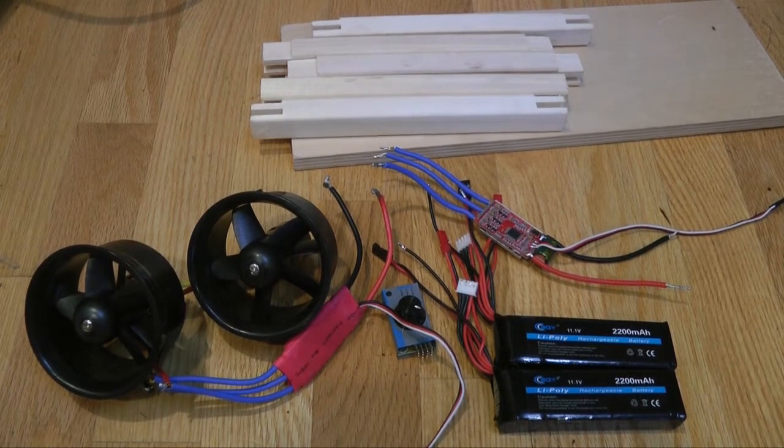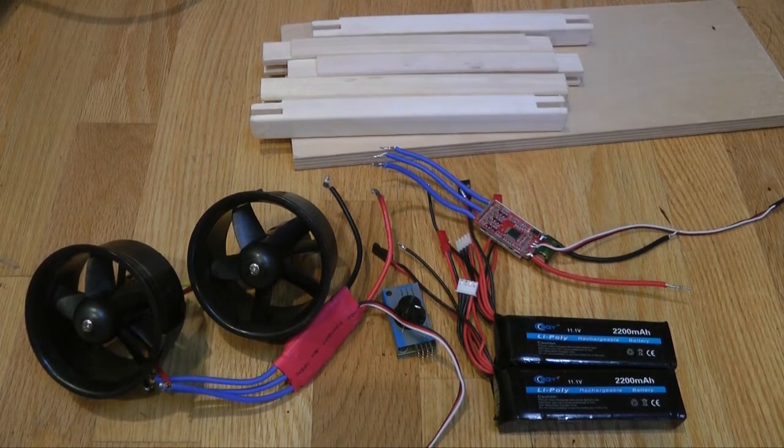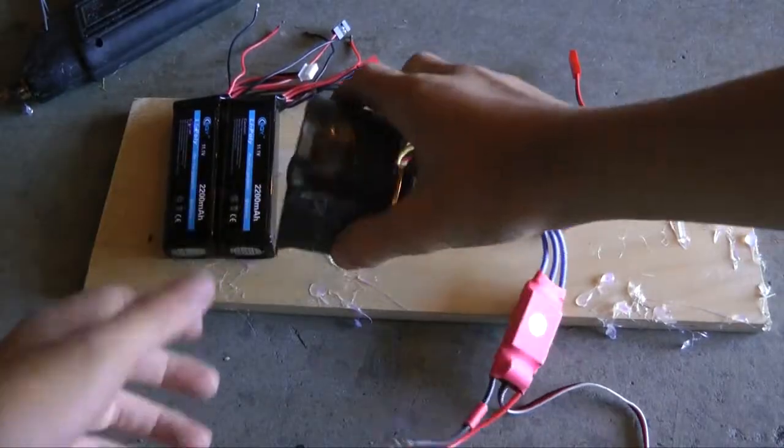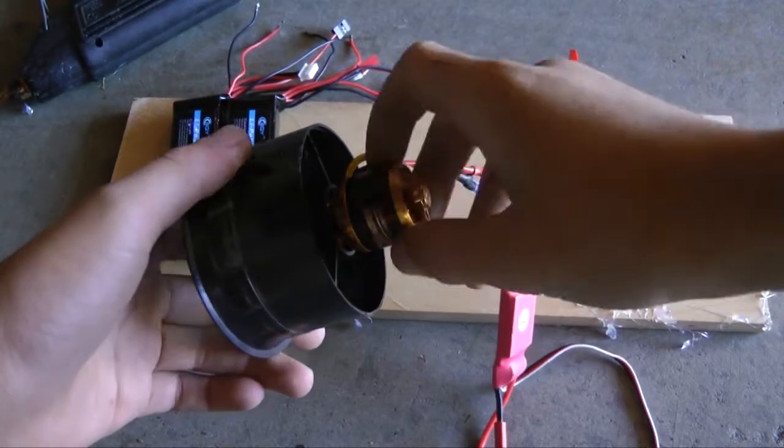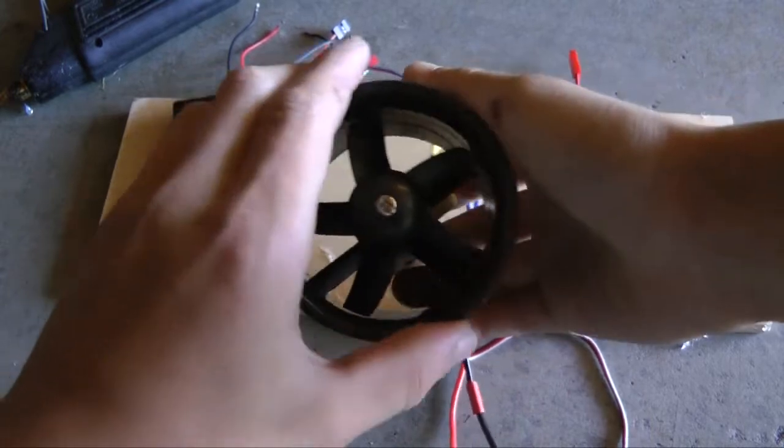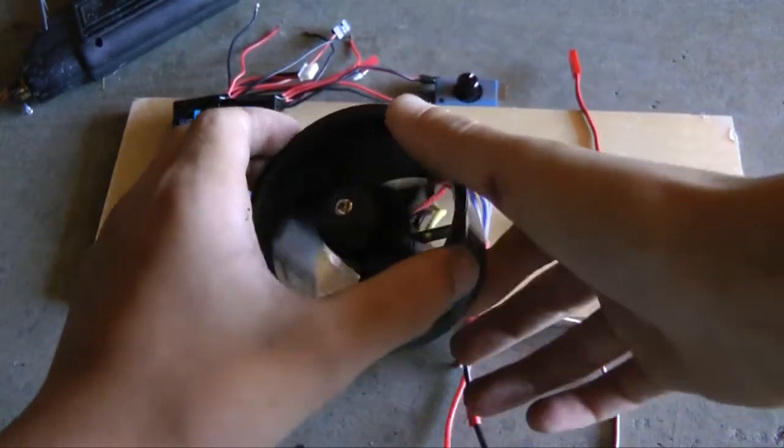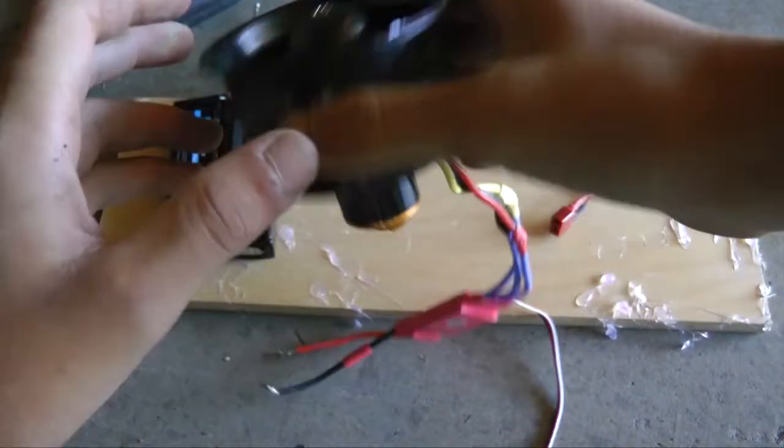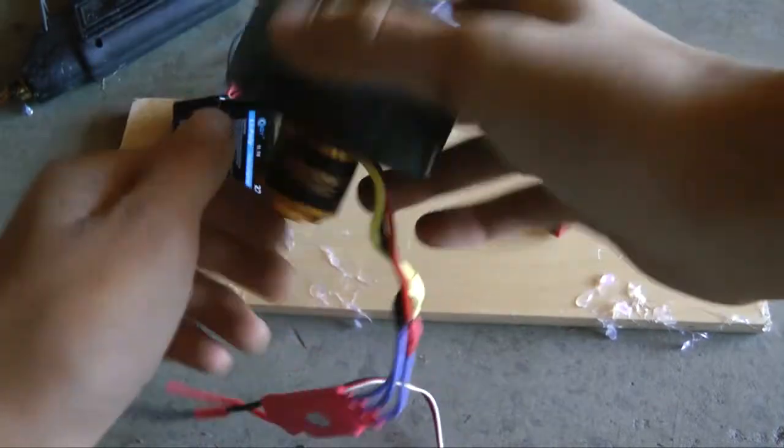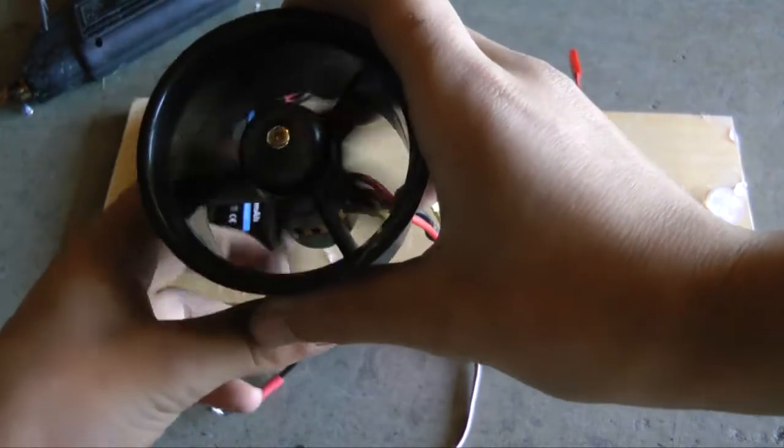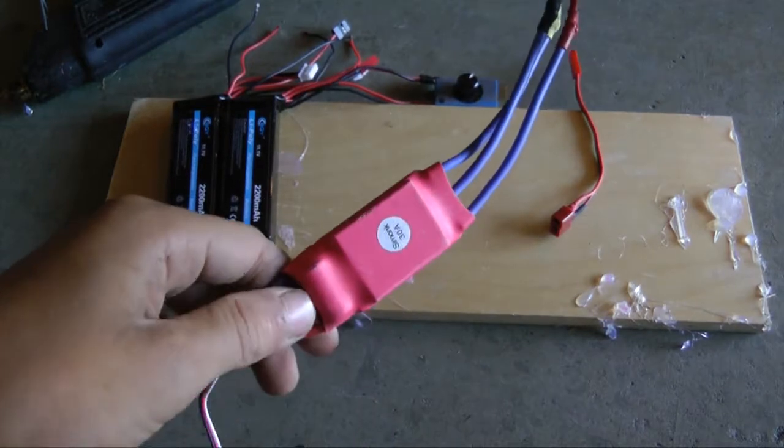Hey guys, today we're going to build an EDF powered scooter. Let's get started. So you might be wondering what an EDF is. An EDF is basically just a really strong hair dryer except with no heat. It has a brushless motor on one side that's connected to a fan. It spins really fast.